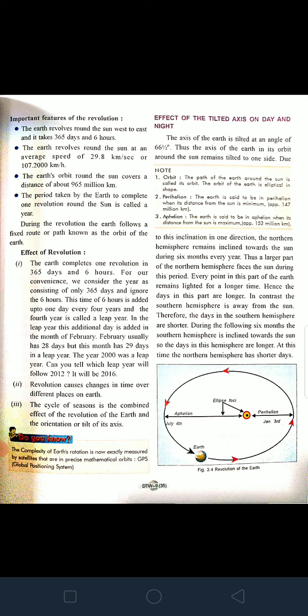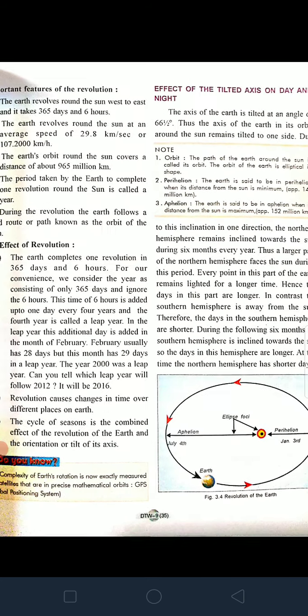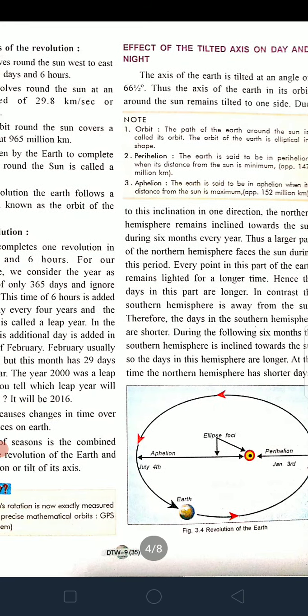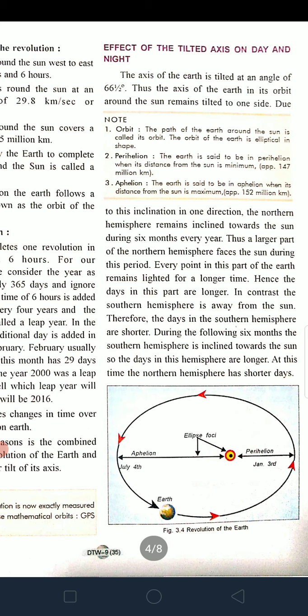An important topic is the effect of the tilted axis on day and night. The axis of the earth is tilted at an angle of 66.5 degrees, and thus the axis of the earth in its orbit around the Sun remains tilted to one side.